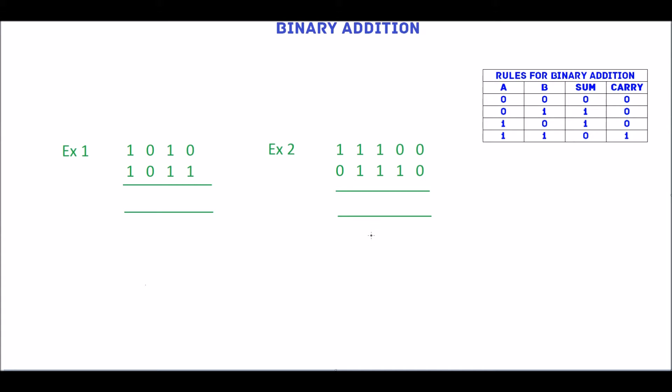Start with rightmost digits which are 0 and 1. 0 plus 1 is 1.